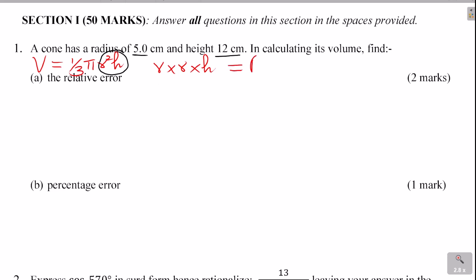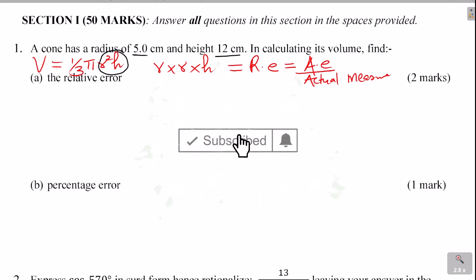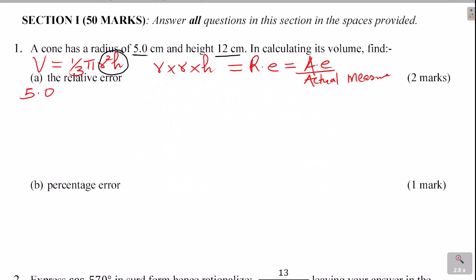How do we get relative error? Relative error (RE) is given by the absolute error (AE) divided by the actual measurement. Let us get the relative error in each measurement, starting with the radius. Radius is 5.0 centimeters, so we start by getting the absolute error. The absolute error is given by half times the least unit of measurement. The least unit in 5.0 is 0.1, so the absolute error is 0.05.